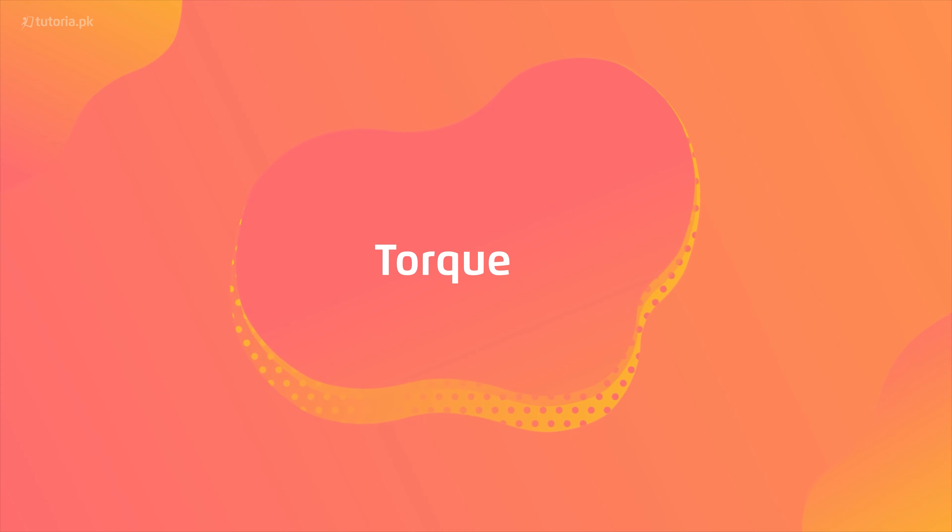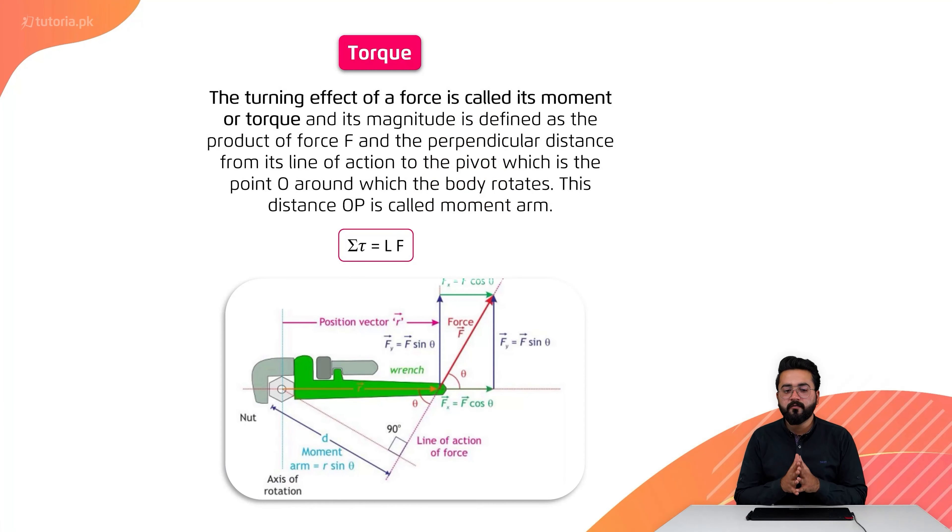Now we are going to talk about what is torque. The turning effect of a force is called its moment or torque, and its magnitude is defined as the product of force and the perpendicular distance from its line of action to the pivot, which is the point O around which the body rotates.